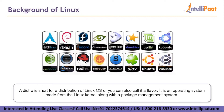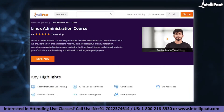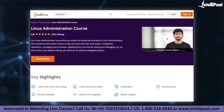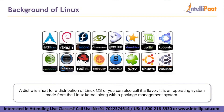Rather than a timeline, a discussion on the various distros is more appropriate. A distro is short for distribution of Linux OS, or you can also call it a flavor. It is an operating system made from the Linux kernel along with a package management system. A package management system is a collection of software tools responsible for downloading, installing, updating and removal of applications in a consistent manner, similar to the app store in Android OS. There are more than 500 distros in active development currently.